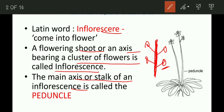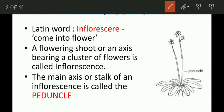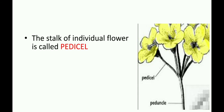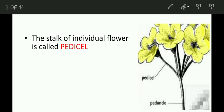The main axis or stalk of an inflorescence is called the peduncle. This branch — the main axis which bears the flowers — is called the peduncle. Now, the stalk of an individual flower is called the pedicel. So the main axis is the peduncle, and the stalk of the individual flower is the pedicel.